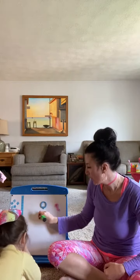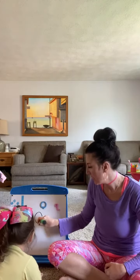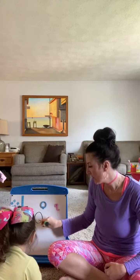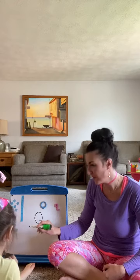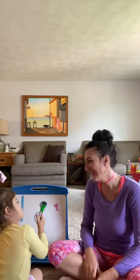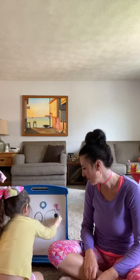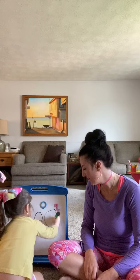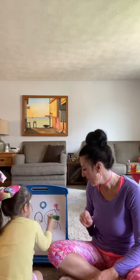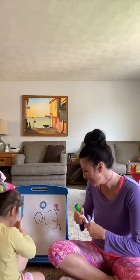Ready? Great big circle, a line right through. Now you've made a capital Q. I know how to do that. Great big circle, a line right through. Now you've made a capital Q.